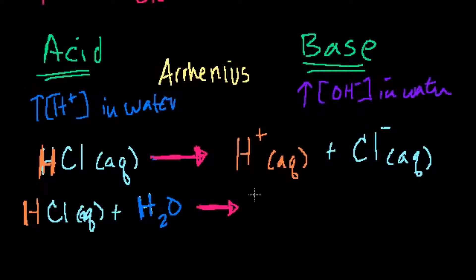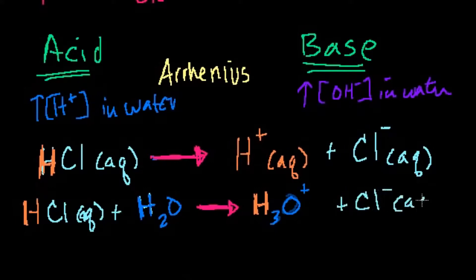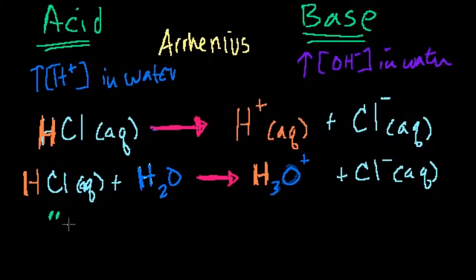Written with water, it's a one-way reaction, and you end up with H₃O⁺ — it donated its hydrogen proton to this water molecule — plus the chloride anion in aqueous solution. These acids that completely dissociate, as opposed to ones that don't completely dissociate, are called strong acids.